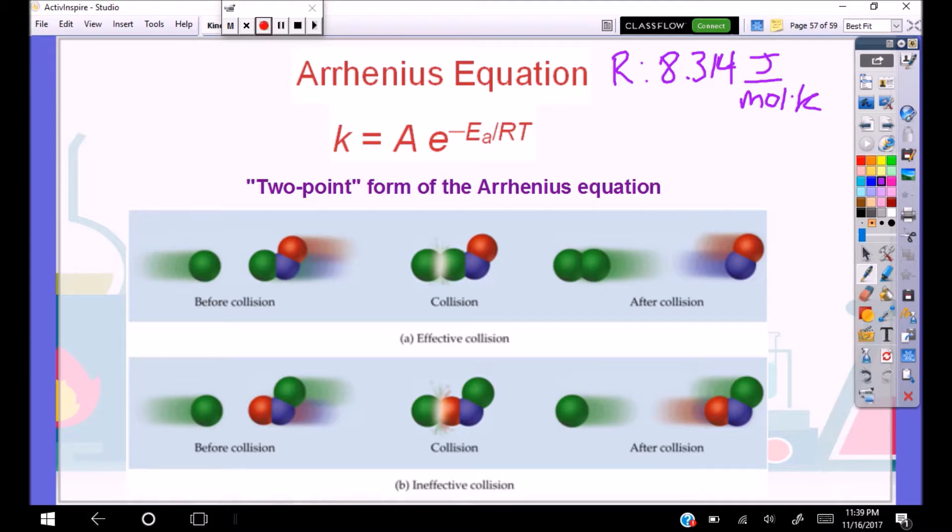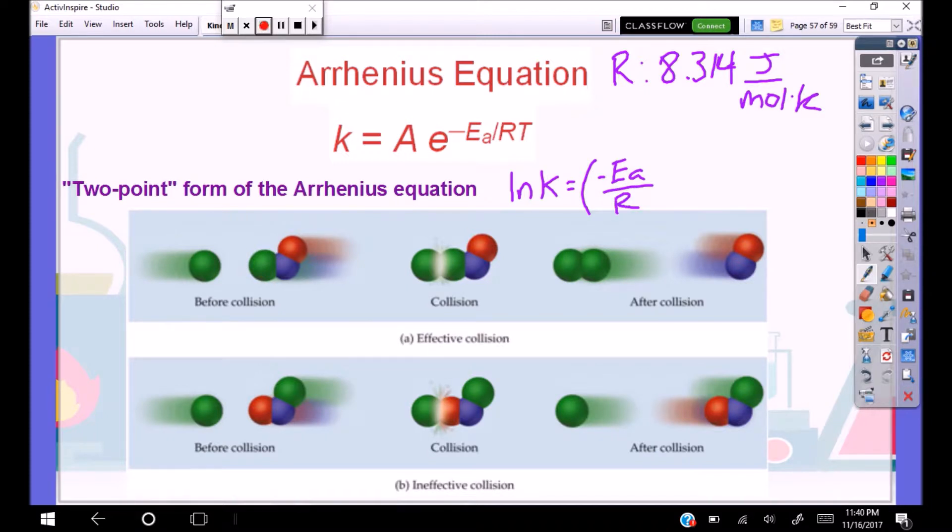The nice thing about this equation is that we can turn this into a two-point form. We can say that this is equal to natural log of K equal to negative EA over R times 1 over T plus natural log of A. If we look at it in this form, we have a Y equals MX plus B.